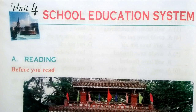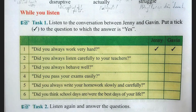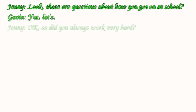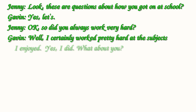Task one. Listen to the conversation between Jenny and Gavin. Put a tick to the question to which the answer is yes. Look, these are questions about how you got on at school. Shall we just go through them? Yes, let's. So, did you always work very hard? Well, I certainly worked pretty hard at the subjects I enjoyed. So, yes, I did.